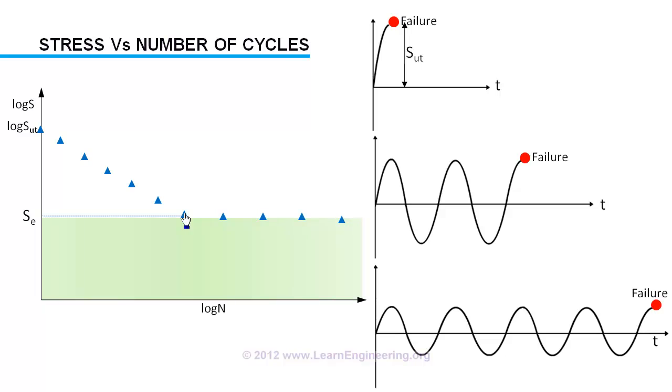You can see that endurance limit is way below ultimate stress value. It is a good approximation to consider this two regions as linear.